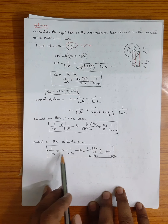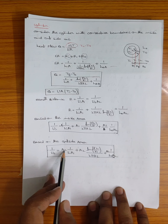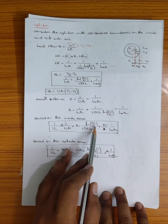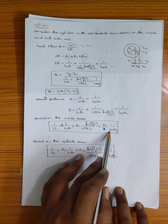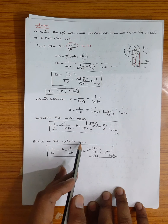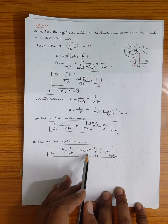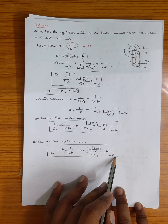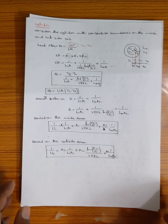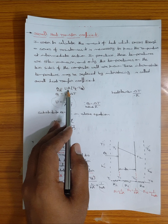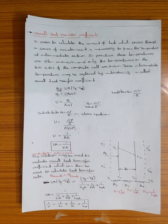Based on outside area A2: 1/U0 = A2/(Hi × A1) + A2 × ln(R2/R1)/(2πKL) + A2/(H0 × A2). After canceling A2/A2, this gives the outside-area-based Overall heat transfer coefficient formula. For GATE examinations, the important formula is Q = UA × ΔT, where U is the Overall heat transfer coefficient.